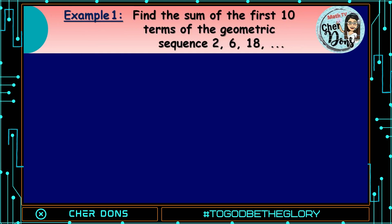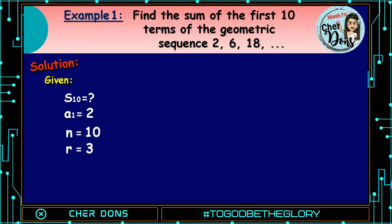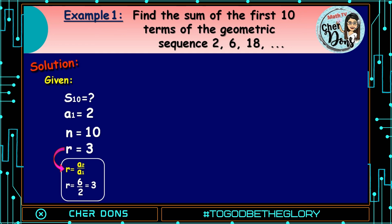Example number 1. Find the sum of the first 10 terms of the geometric sequence 2, 6, 18, and so on. Solution. Given: we're looking for S of 10. A sub 1 is 2, n is 10, and r is equal to 3. We get the value of r by dividing the second term by the first term: a sub 2 divided by a sub 1 is equal to 6 divided by 2, that is 3.